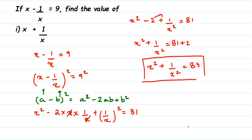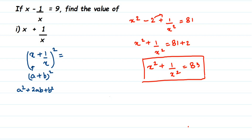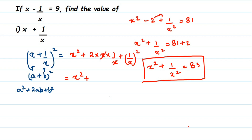So far we have x square plus 1 by x square equals 83, but what we want is x plus 1 by x — we don't want the square. So let me find the value of x plus 1 by x directly. I'm going to take a square of x plus 1 by x. This is a plus b whole square, so we use the identity: a square plus 2ab plus b square. In place of a we have x, in place of b we have 1 by x. This becomes x square plus 2 into x into 1 by x plus 1 by x whole square.